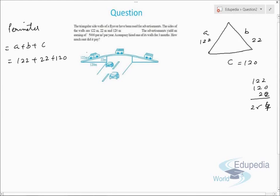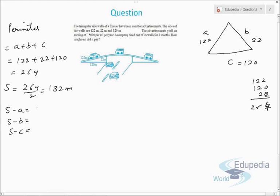The perimeter is 264 meters. The semi-perimeter s = 264 ÷ 2 = 132 meters. Now we find s−a, s−b, and s−c: s−a = 132 − 122 = 10; s−b = 132 − 22 = 110; s−c = 132 − 120 = 12.